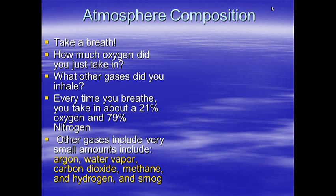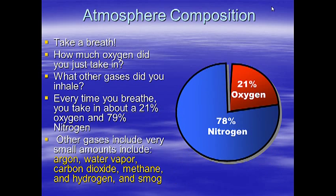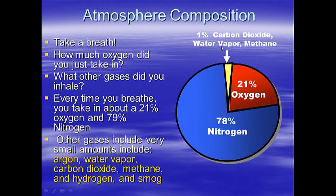Atmospheric composition — take a deep breath. How much oxygen did you just take in? It turns out it's about 21% oxygen. Every time you breathe, you take in roughly 21% oxygen and about 78–79% nitrogen. Other gases include small amounts of water vapor — if you live near the ocean or a lake, you're probably breathing more water vapor. Or carbon dioxide, if you live near a freeway where cars emit it. Or methane, if you live near a cow farm. On average, it's about 1% other stuff: CO2, water vapor, and methane.